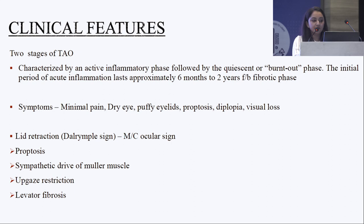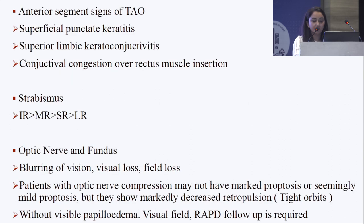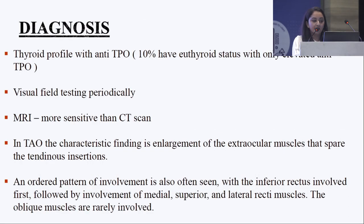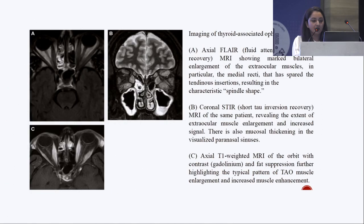Thyroid ophthalmopathy presents with typical clinical features such as lid lag or lagophthalmos and bilateral lid retraction. Diagnosis is aided by a complete thyroid profile, and MRI is more sensitive than CT for TAO, showing characteristic enlargement of the extraocular muscles. They appear to have a characteristic spindle shape, as can be seen in imaging.